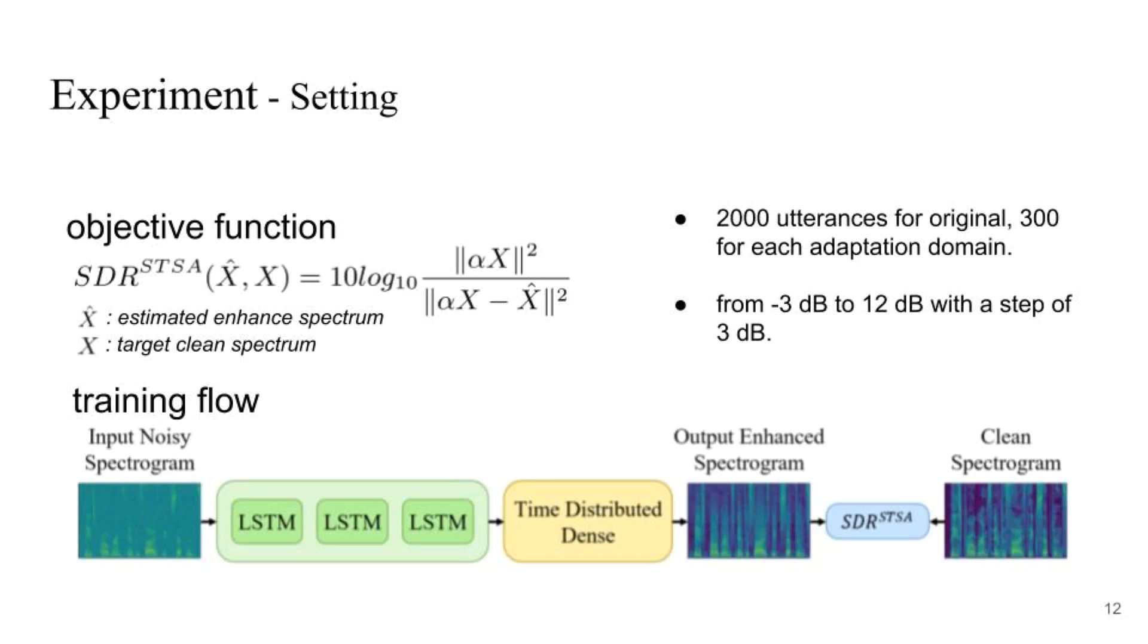For the training set, 2,000 utterances were randomly selected from the VCTK corpus. Each utterance was contaminated with 13 types of noise from the NOISEX-92 database at 6 SNR levels, ranging from negative 3 dB to 12 dB with a step of 3 dB. This training set is termed T0.